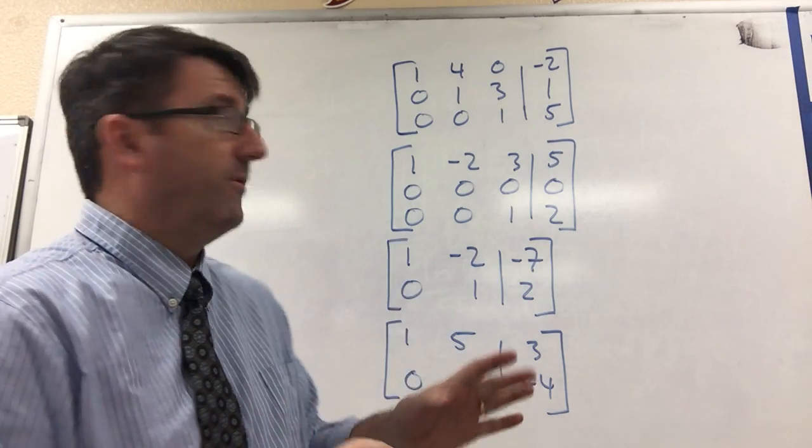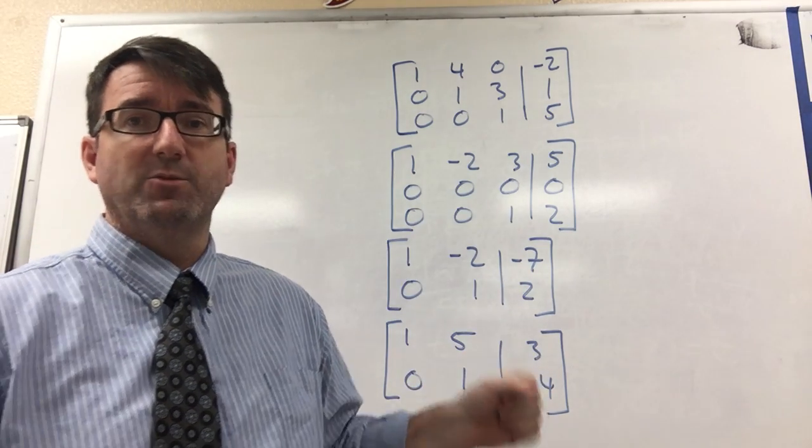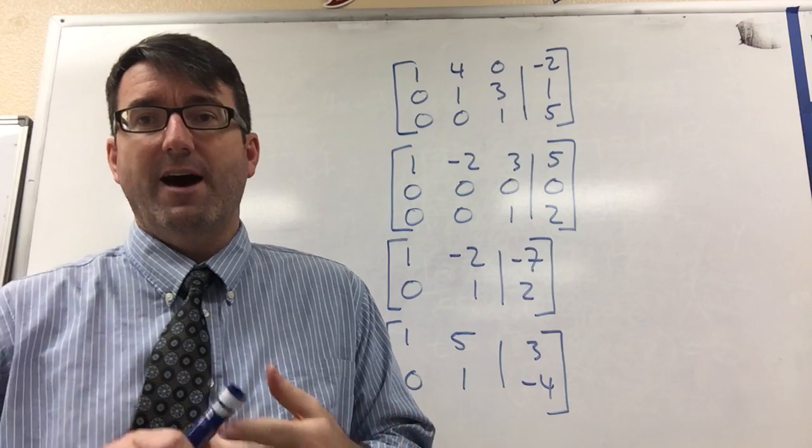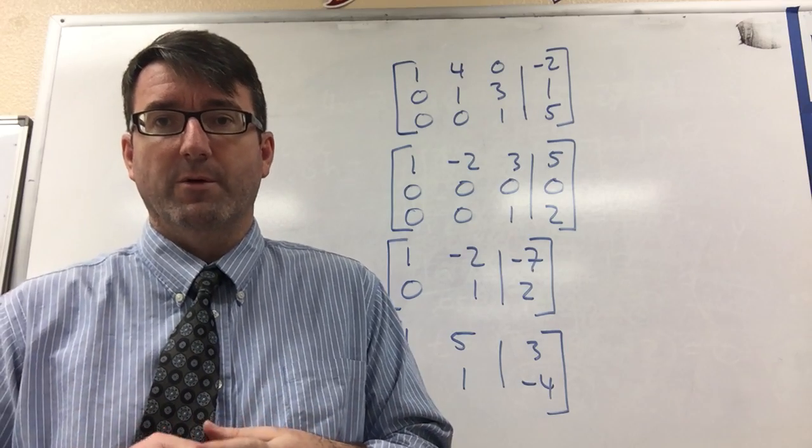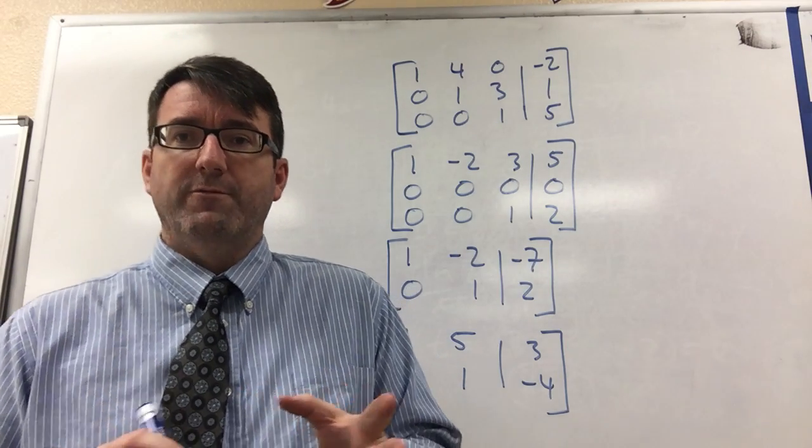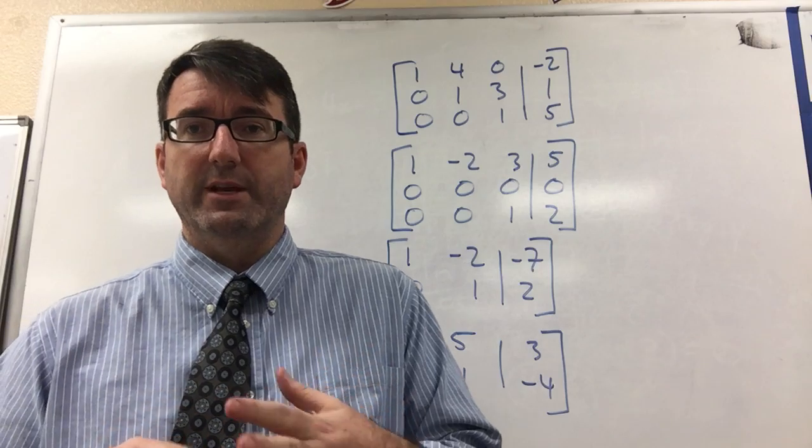Number two gives us four matrices and asks which of these is not in row echelon form. So for row echelon form, there's three things that we need to look for.